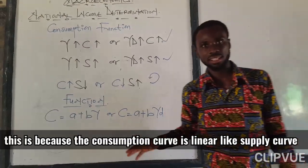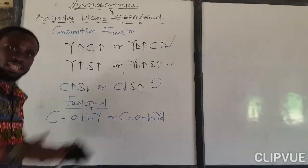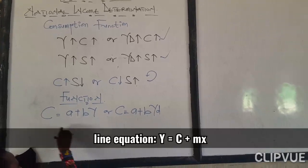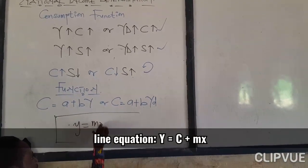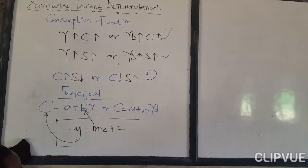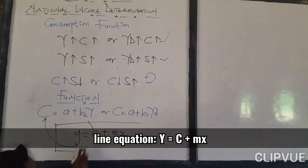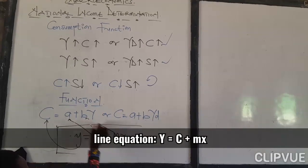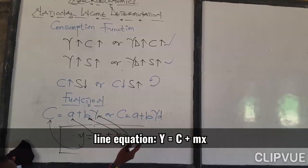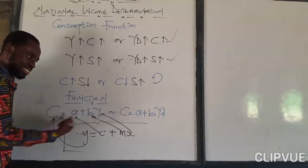This is the same as the equation of a line as we know from junior high school and senior high school. The consumption curve is linear, so the consumption function follows the line formula Y equals MX plus C — written as C plus MX. In the consumption function, Y corresponds to C (consumption), M corresponds to B (the slope), and X corresponds to Y (income). So don't be confused — because it is linear, it follows the equation of a line. In our next lesson, I'm going to explain each individual item and the formula.